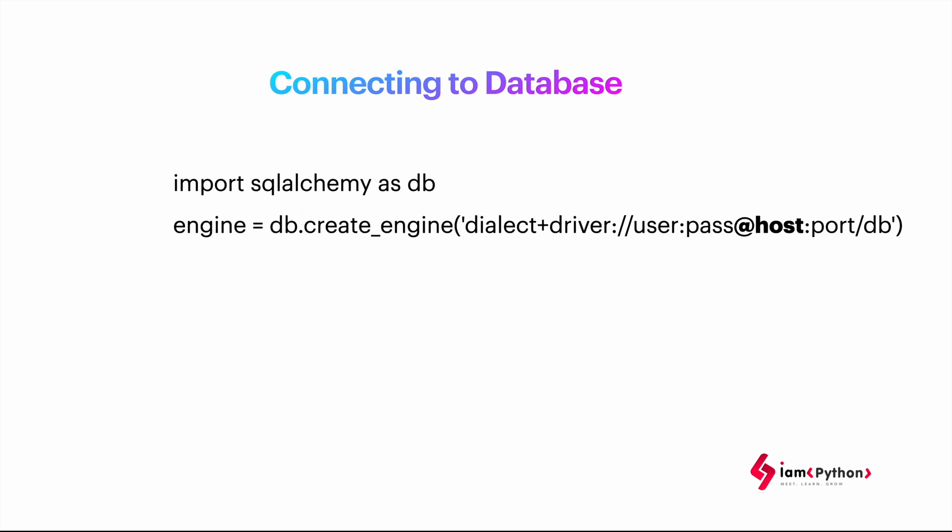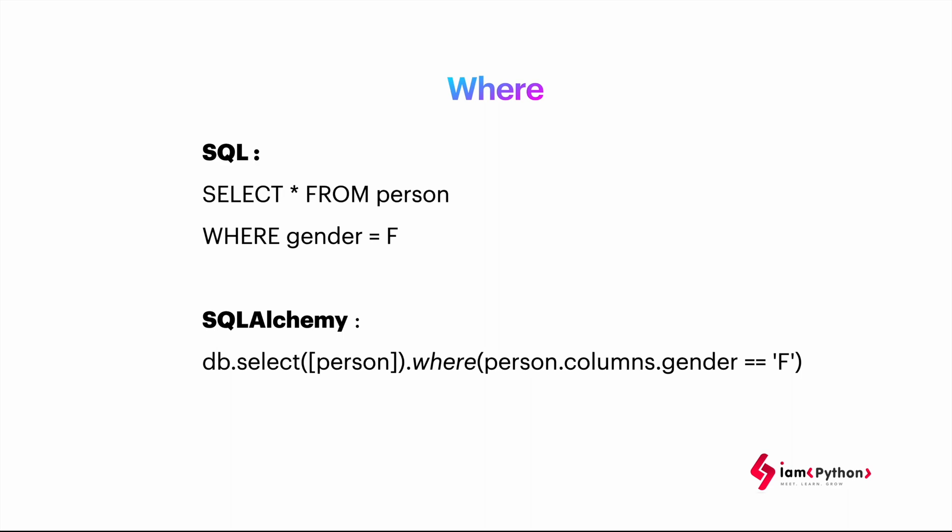For example, if you want to connect to a database, here is the example code. You need to import the SQLAlchemy package. You use the engine, which specifies which driver to use — MySQL or PostgreSQL — along with the password and port number for the database you're connecting to. You can see everything on screen: dialect, driver, username, password, hostname (the server name), port, and the database name you want to connect to.